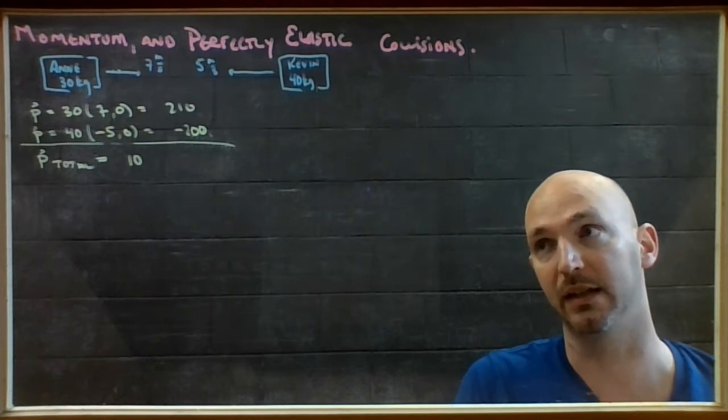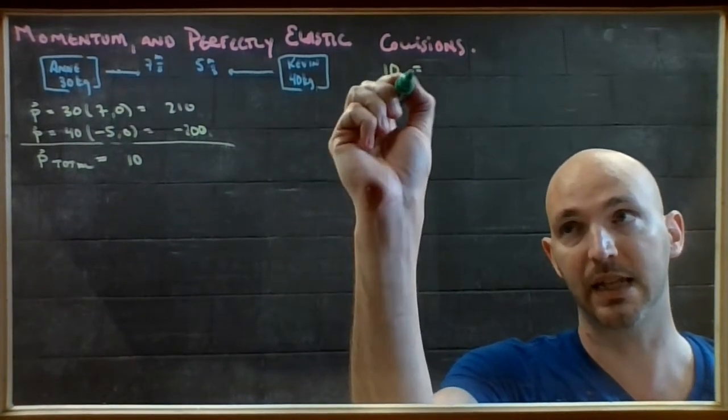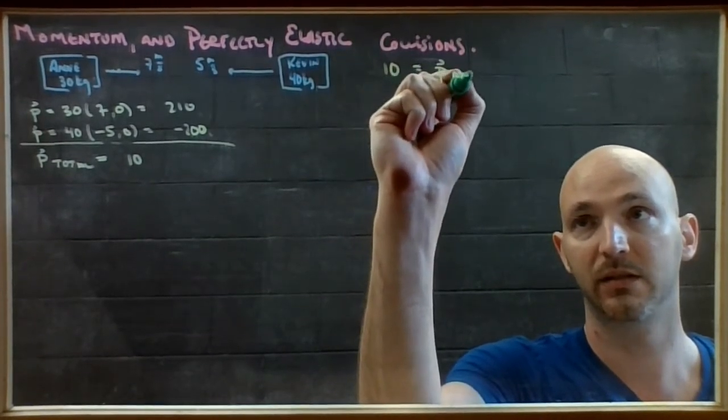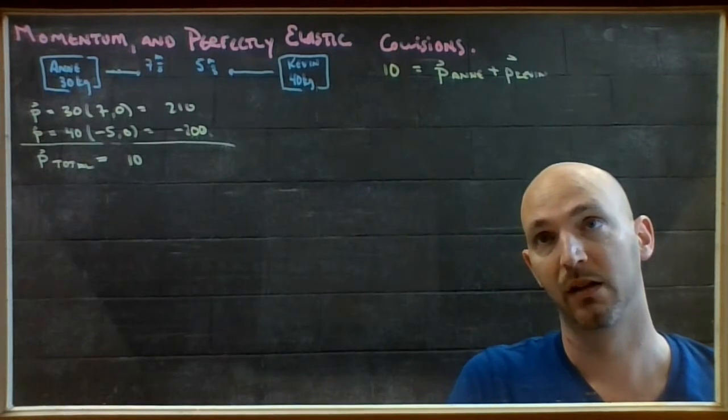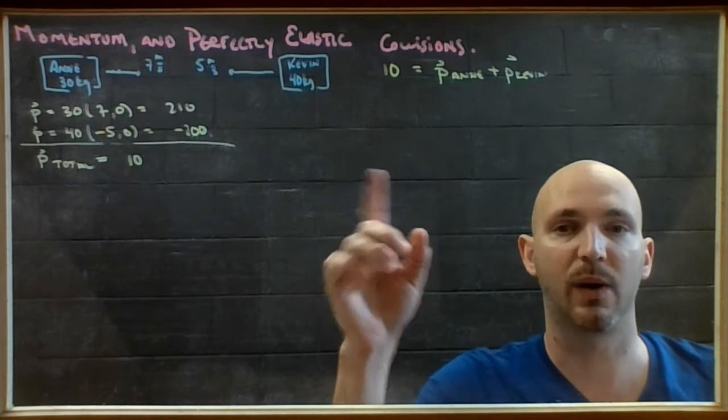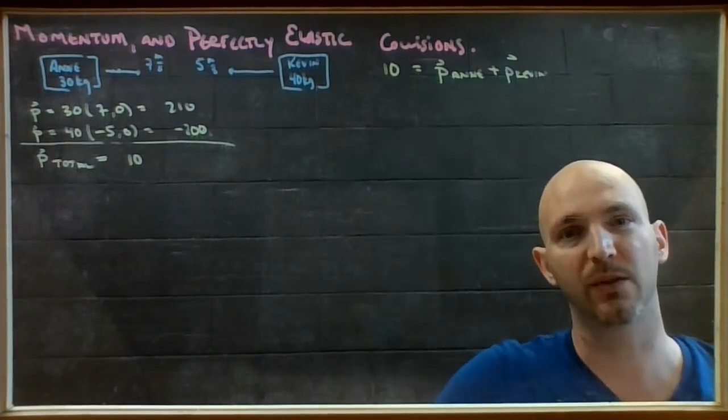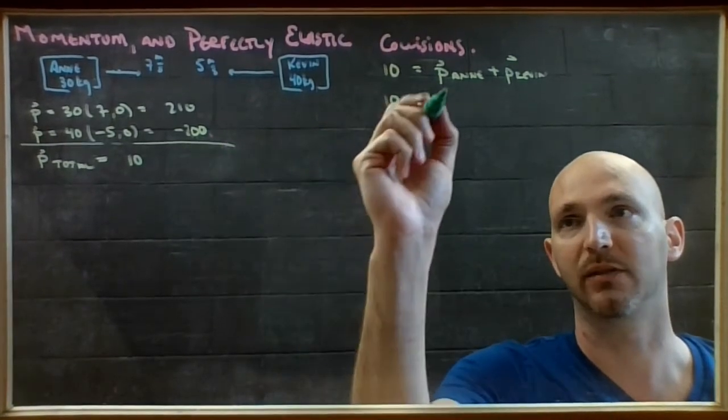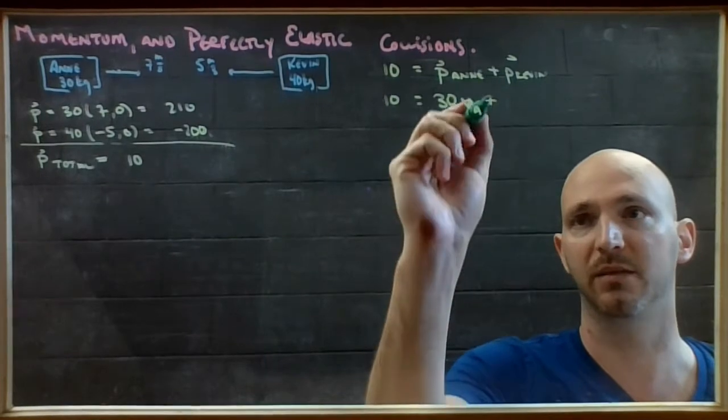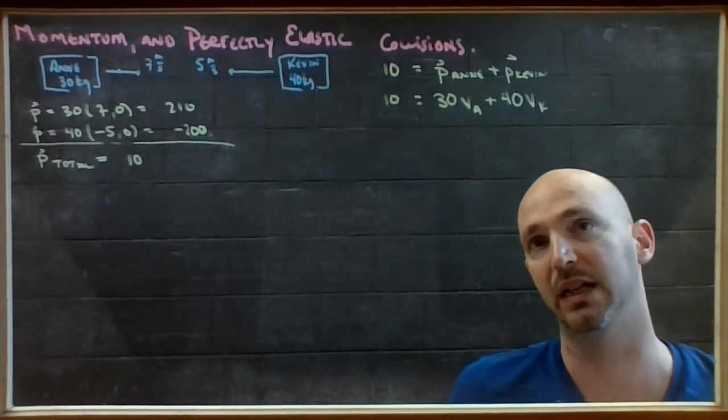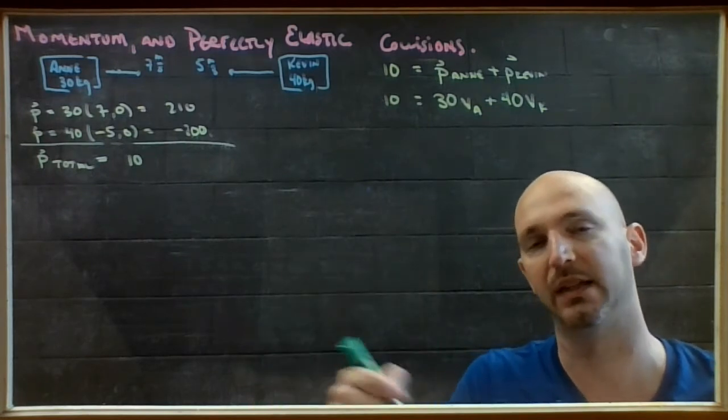What I did next in the inelastic collision was to say that this momentum going into the collision had to equal the momentum of Ann and Kevin on the way out. Now you can see it's different already. In the inelastic question, Ann and Kevin were not separate objects when they left - they were a single thing with a single combined mass. When I try to write this one out, Ann's momentum is 30 kilograms times whatever her speed is after the collision, and Kevin's momentum will be 40 kilograms times whatever Kevin's speed is. I have two variables because I have two objects.